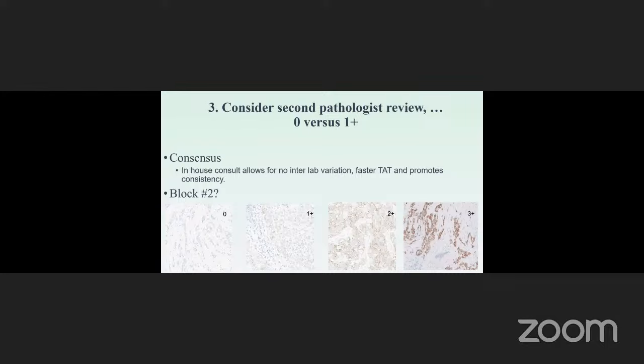The ASCO-CAP update advocates to consider second pathologist review in all challenging borderline cases for distinguishing zero and one plus and to seek consensus when necessary. I prefer internal consensus because an in-house consult allows for no inter-lab variation, faster turnaround time, and promotes consistency. But if this is not achievable, then sending it to your other colleagues maybe at other institutions who are experts in breast pathology may be a viable option. In a crucial case, it may be necessary to test a second blocks and more blocks because it may not be a bad idea in a heterogeneous case where the results may vary and if the results are crucial to the oncologist. And we will talk about heterogeneity shortly.